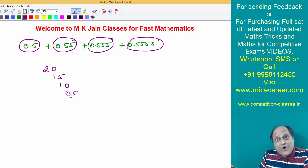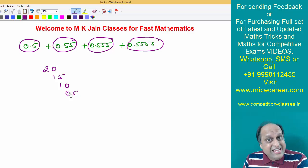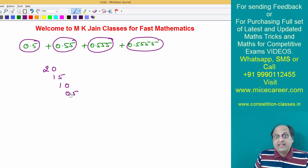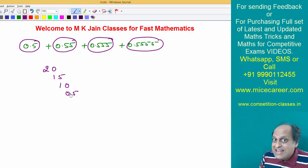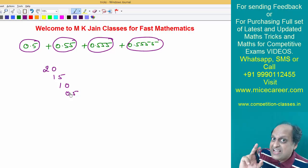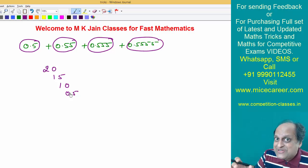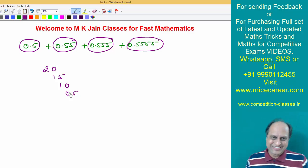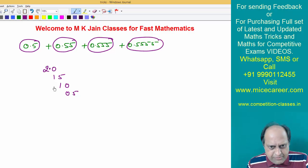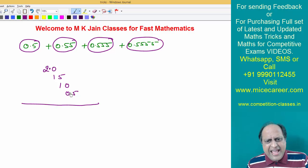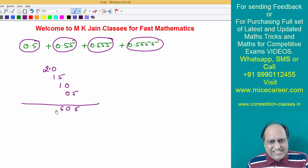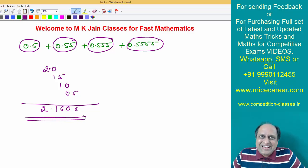So: 5 into 4 is 20, 5 into 3 is 15, 5 into 2 is 10, 5 into 1 is 05 — not single 5, write 05. You need to write in two digits. In the first number, put a decimal after one place. Now simply add it. The answer is 2.0617. So this is your final answer.